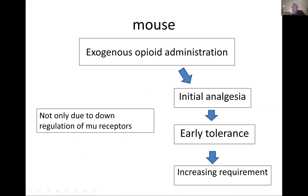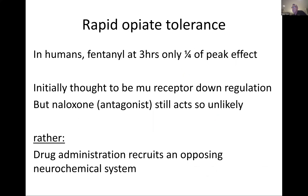This is thought to be an evolutionary protective mechanism — you break your leg, endogenous opioid release takes the pain away so the femur heals, and then that same stimulus gives you increased pain so you stay away from that stressor. Now if you give exogenous opioids — think about patients you're giving morphine to in ICU — it creates analgesia, then develops early tolerance with an increasing requirement.